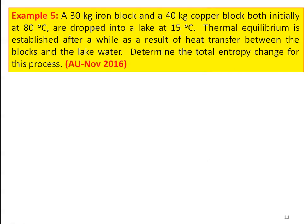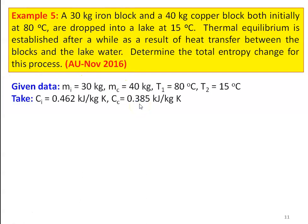The fifth problem is from the Anna University question paper, November 2016. A 30 kg iron block and a 40 kg copper block, both initially at 80°C, are dropped into a lake at 15°C. Thermal equilibrium is established after heat transfer between the blocks and the lake water. Determine the total entropy change of this process. Given: mi = 30 kg, mc = 40 kg, T1 = 80°C, T2 = 15°C. Specific heat of iron: 0.462 kJ/kg·K; specific heat of copper: 0.385 kJ/kg·K.